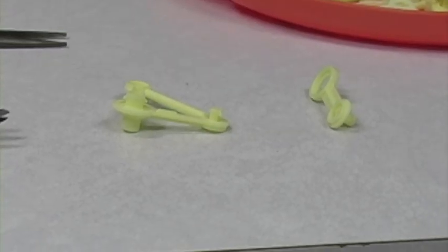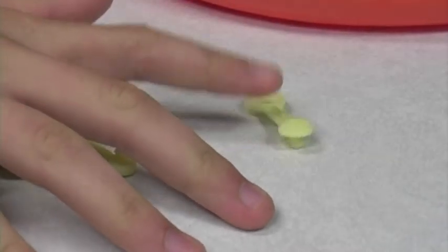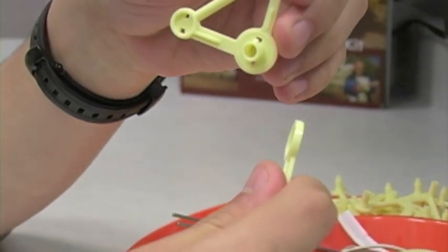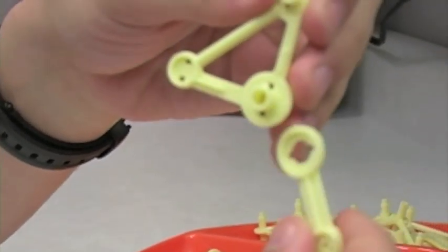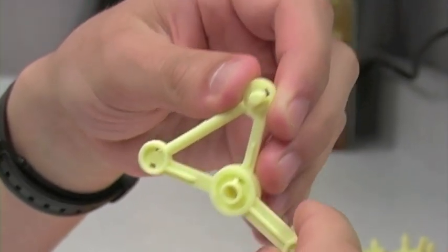Step two is going to involve part B and part C. Take the larger joint of part C and attach it to part B so that the notches line up and then twist it 90 degrees.